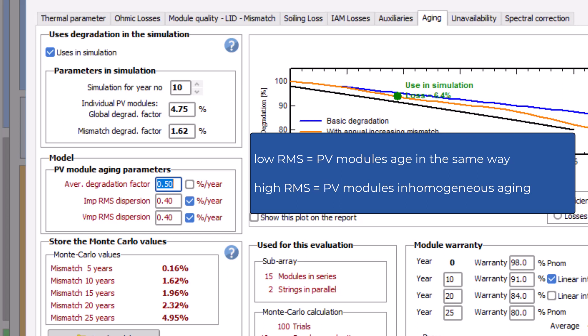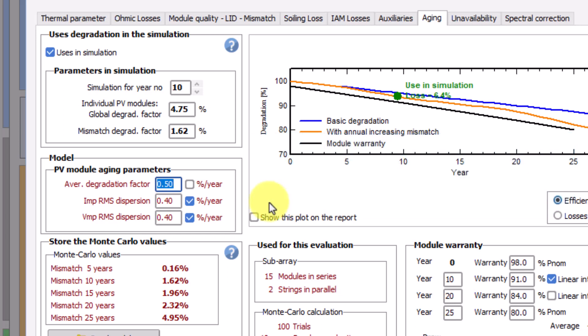A large value would correspond to a more inhomogeneous aging of the PV modules. Here we shall define an RMS dispersion of 0.6% per year for the current and 0.5% per year for the voltage. When you modify the RMS dispersion, you observe that the mismatch degradation factor in parameters in simulation changes as well.